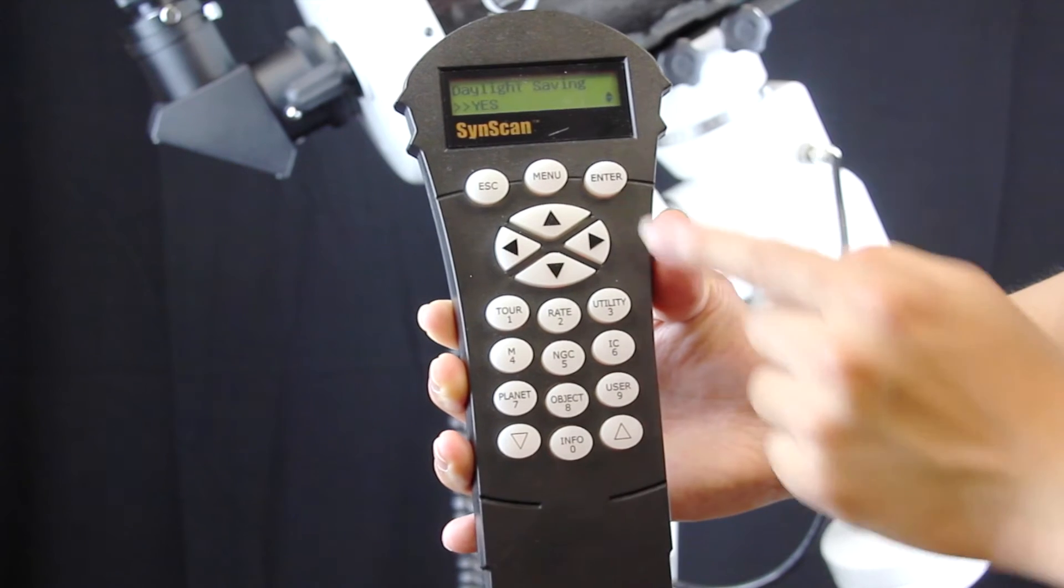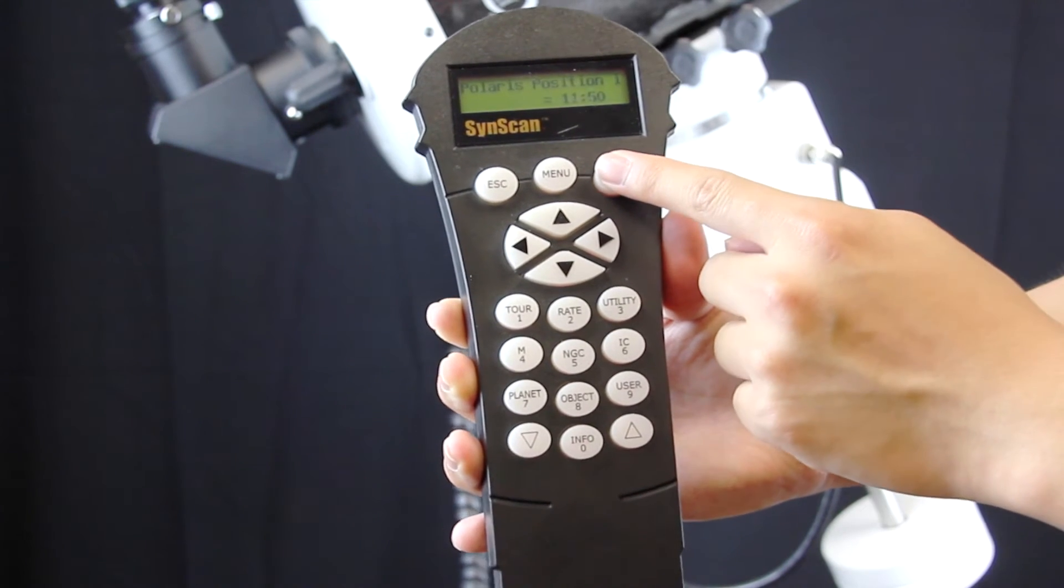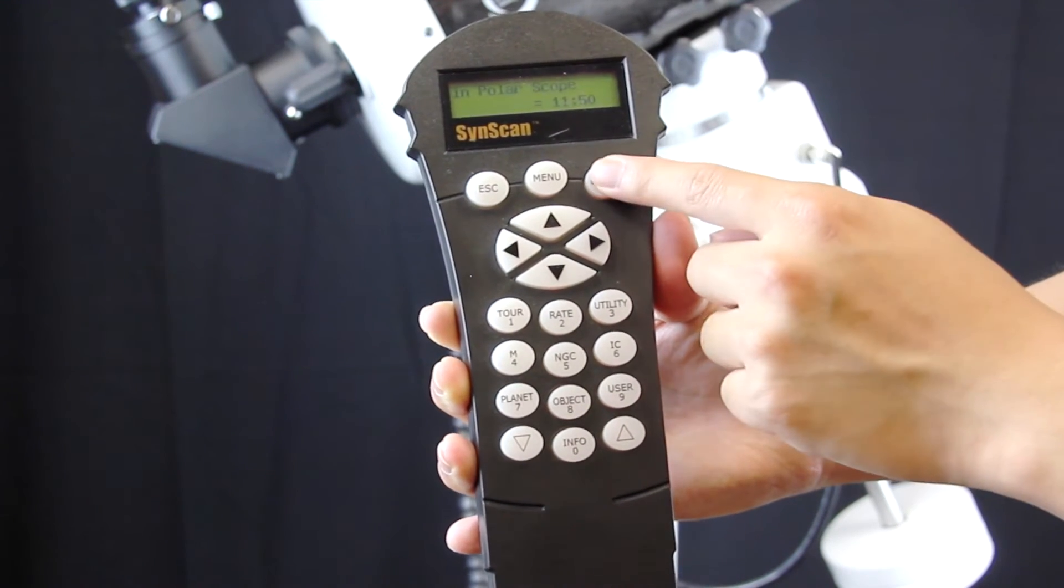Then you choose if you are on daylight saving time. It even shows you Polaris' position in your polar scope.